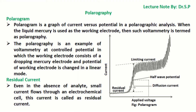In this tutorial we will discuss the polarogram and information obtained from it. A polarogram is a graph of current versus potential in a polarographic analysis. When liquid mercury is used as the working electrode, such voltammetry is termed as polarography. Polarography is an example of voltammetry at controlled potential in which the working electrode consists of a dropping mercury electrode and the potential of the working electrode is changed in a linear mode.